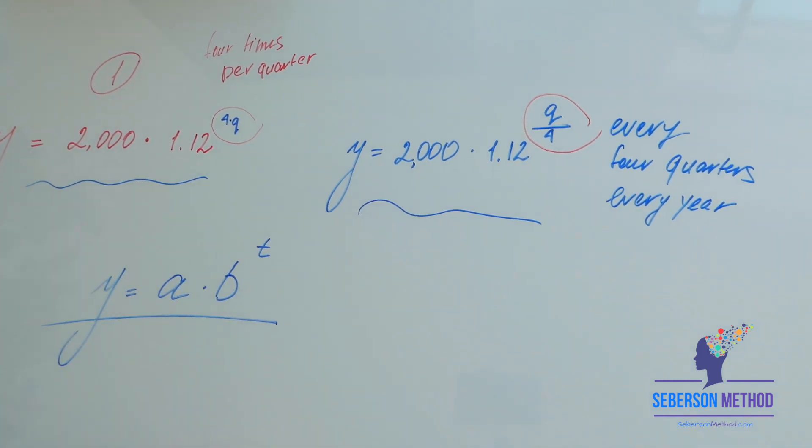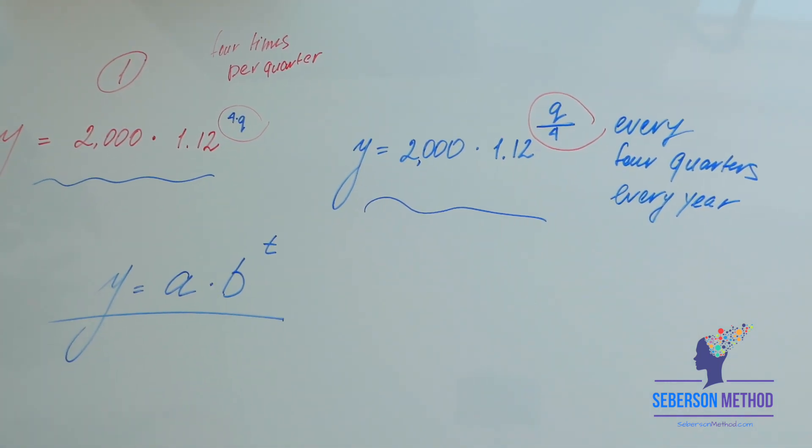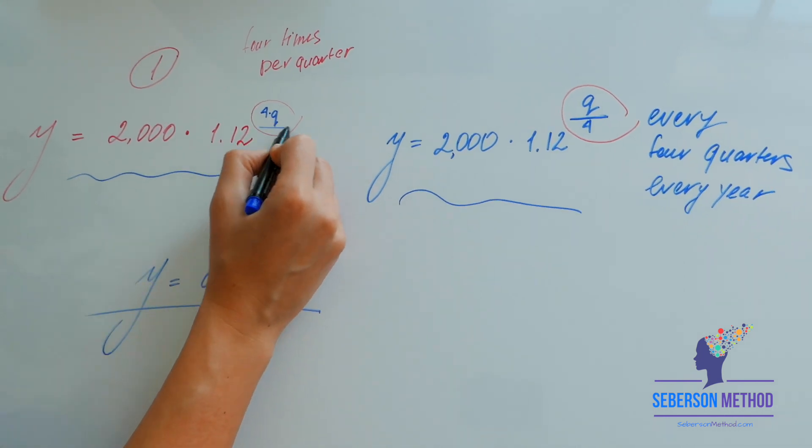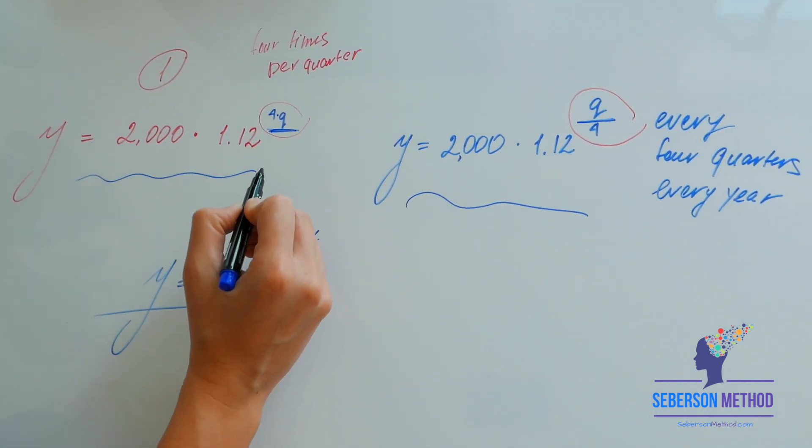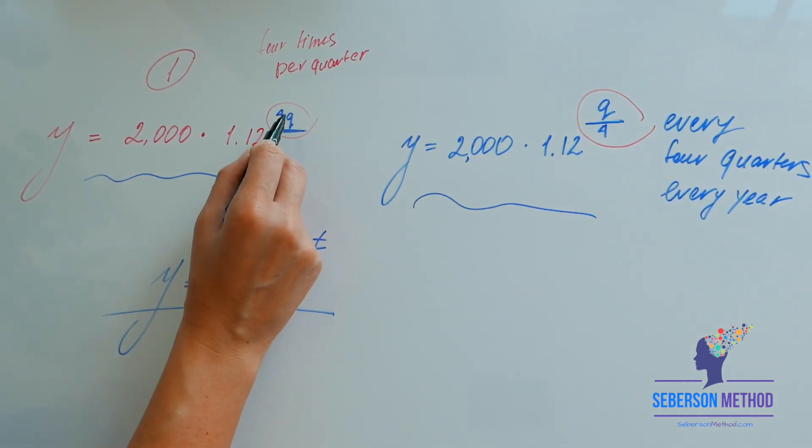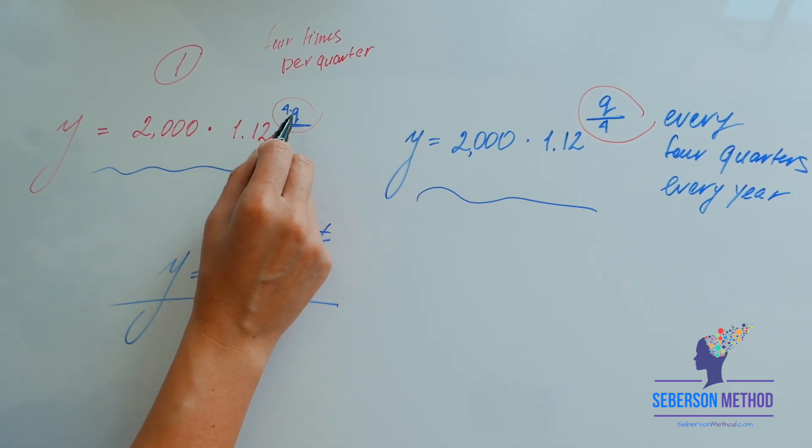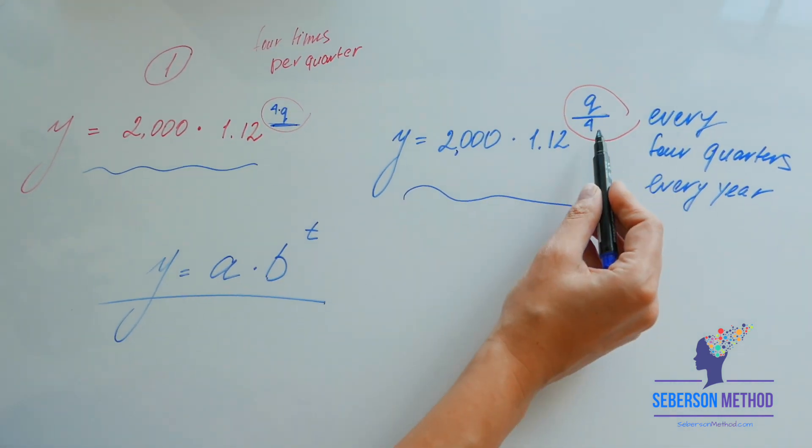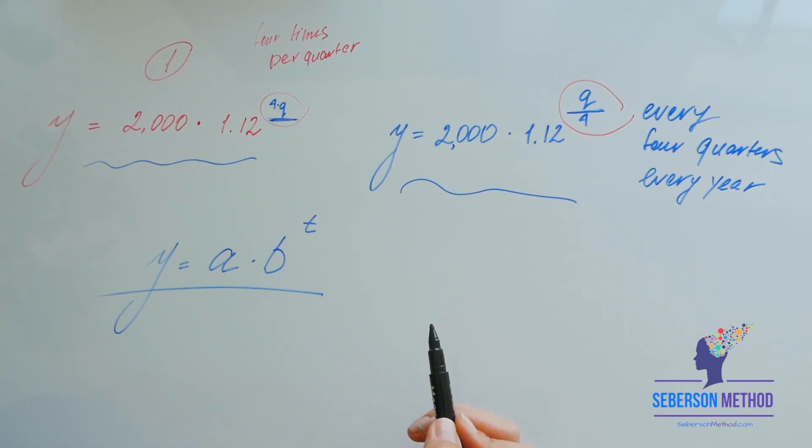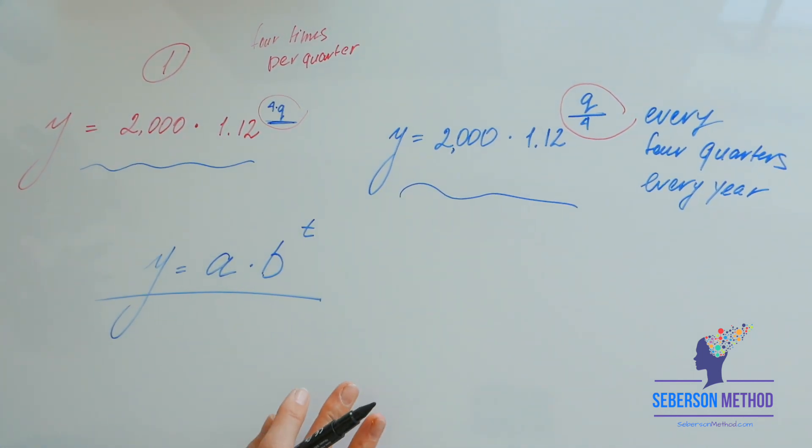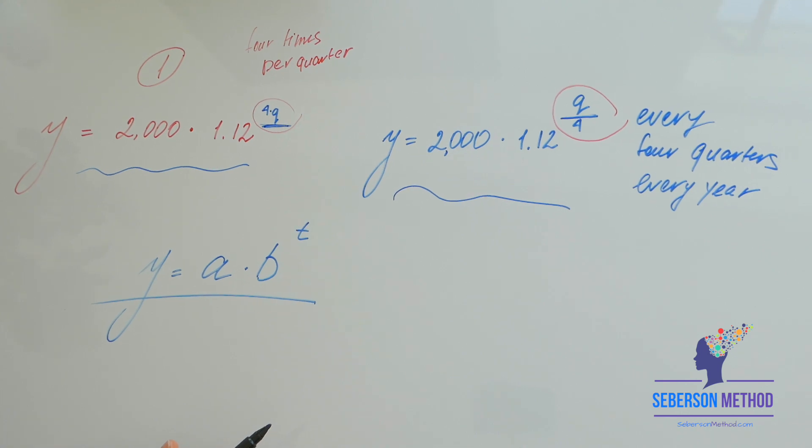What is more frequent? Four times a quarter, or every month, or every year? Of course, every month is more frequent. But the key here is to learn that when your exponent is a product, like four times q, that's four times a quarter, versus q over four, which is every four quarters. I know this could be a little bit confusing for you now, but let's try a few examples.